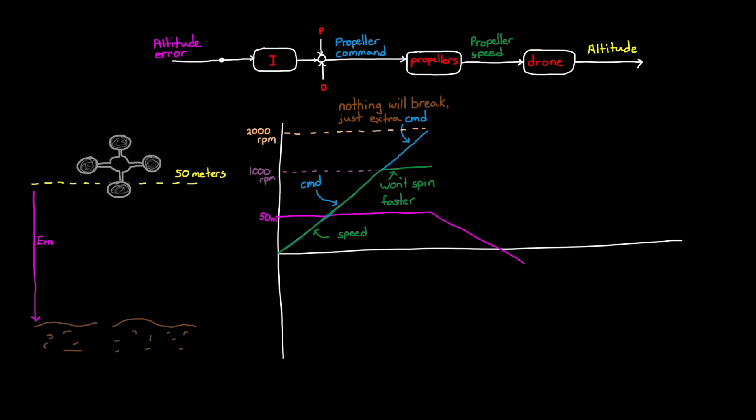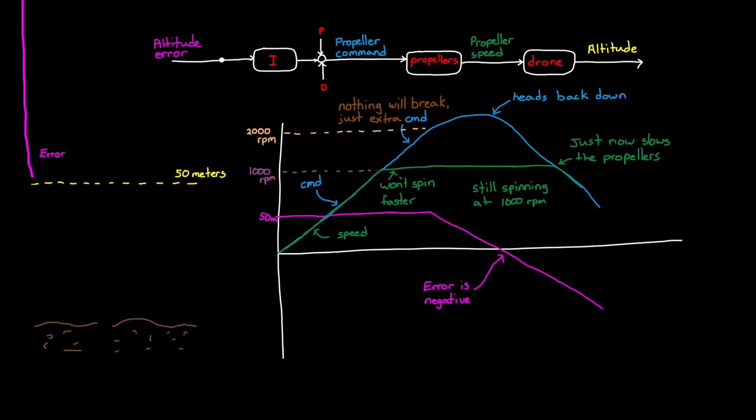Once the drone gets above the command, the error term becomes negative, and the integral output starts to decrease. However, it's coming down from a value of 2000 RPM. So when it's at 1900, the motors are still spinning at 1000. When the command is 1500, the motors are still spinning at 1000. We have to wait until the integral unwinds back to 1000 RPM before the propellers actually start slowing down. And during that entire time, the drone is skyrocketing upwards and out of your sight.